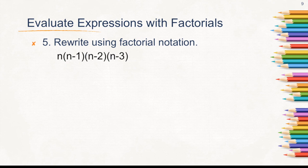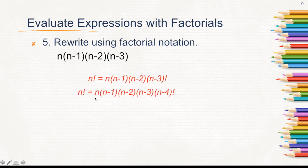Let's go to number 5. Rewrite using factorial notation: n times (n minus 1) times (n minus 2) times (n minus 3). Let's go back to the definition of n factorial. This one has a factorial. So this is not equal to n factorial. By the way, n factorial can also be written as n times (n minus 1) times (n minus 2) times (n minus 3) times (n minus 4) factorial. You can even extend this to n minus 5 as long as there is a factorial at the end.